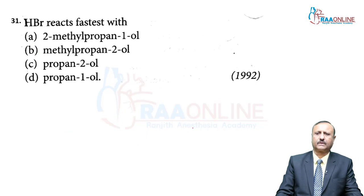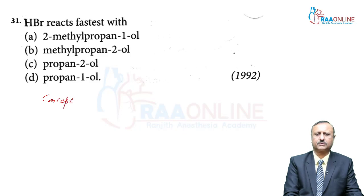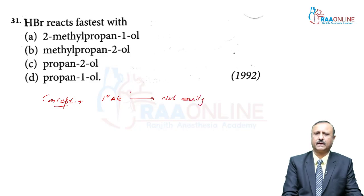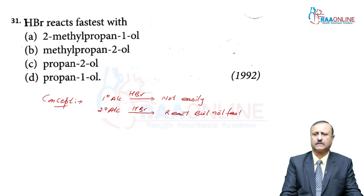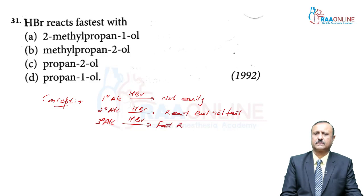Question 31: HBr reacts fastest with which alcohol — 2-methylpropan-1-ol, 2-methylpropan-2-ol, propan-2-ol, or propan-1-ol? The concept: primary alcohols do not easily react with HBr; secondary alcohols react but not fast; tertiary alcohols react easily and the reaction is fast.